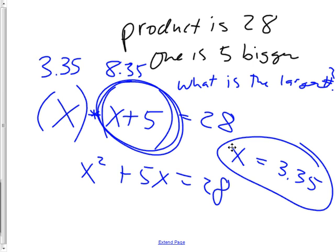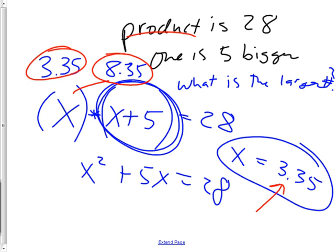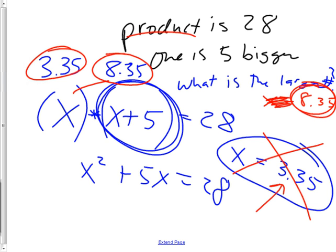x = 3.35 is one number; the other is x + 5 = 8.35. To verify, multiply: 3.35 × 8.35 ≈ 28 — any small discrepancy is from rounding. 8 × 3 = 24, so a little more than 8 times a little more than 3 is about 28. The question asks for the larger number, so the answer is 8.35. These don't have to be whole numbers — decimals are fine.